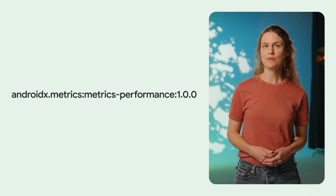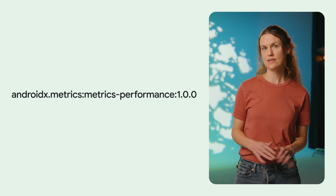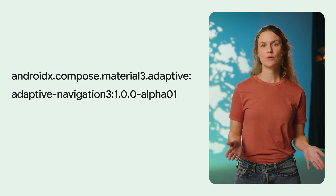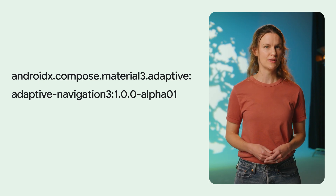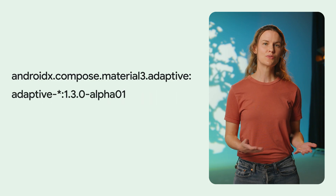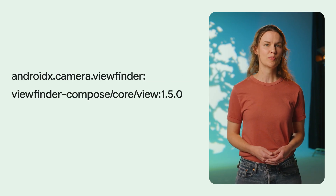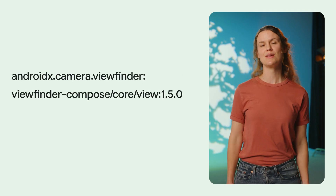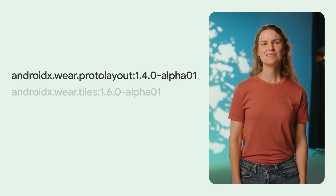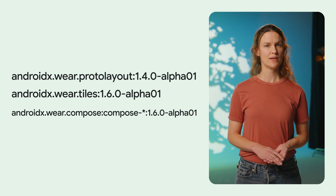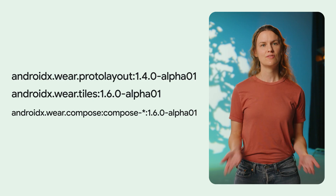On to AndroidX updates. The Jank Stats API is now stable and can be used to identify UI jank and add context to understand why jank is occurring. List Detail Scene Strategy and Supporting Pane Scene Strategy can help you develop canonical adaptive layouts. Material 3 Adaptive now supports margins and edge-to-edge for List Detail Pane Scaffold and Supporting Pane Scaffold. Camera View Finder is stable, providing robust lifecycle-aware view and Compose-based APIs for camera previews. Several improvements for Proto Layout and Tile Libraries include new helper methods for images, APIs to accept pending intent as click actions, and fade-in helper animations.